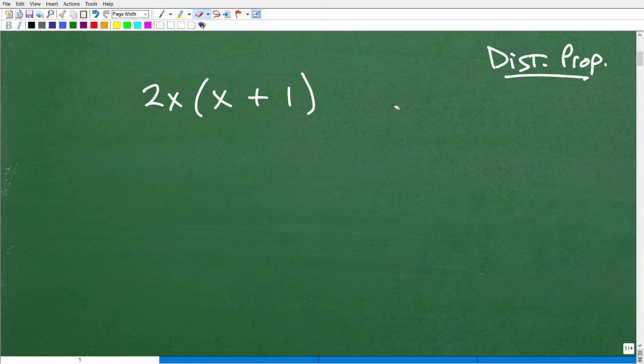But the distributive property is awesome because it works in algebra as well with algebraic terms. If you remember the distributive property, you can handle any polynomial multiplication situation. That's why I'm bringing it up. So how would I do a problem like this? Well, if you can't do this problem, you're not going to be able to do the problem that we're going to be doing here in a second. So we would go like this. 2x times x is going to be 2x squared and then 2x times 1 is going to be 2x. So we're distributing this 2x to these terms.